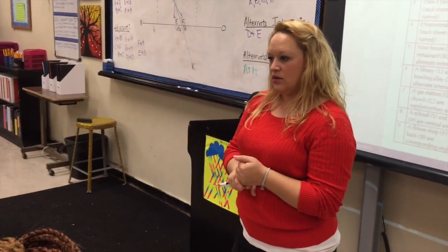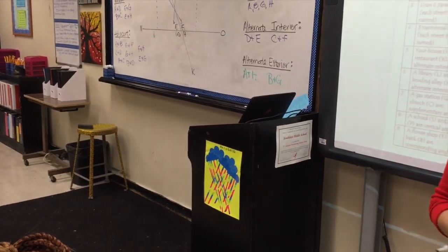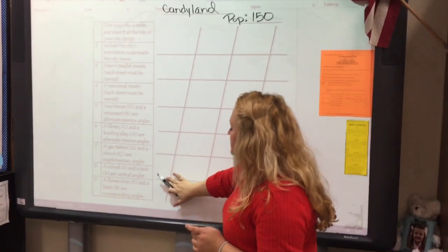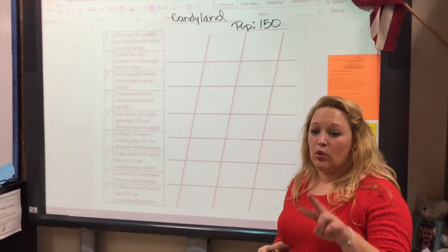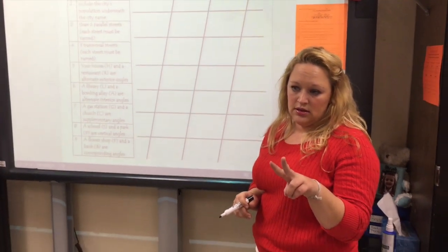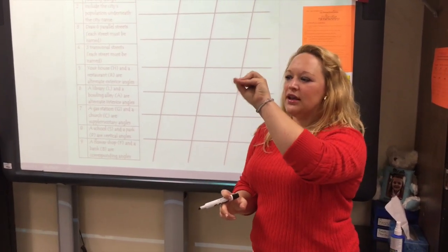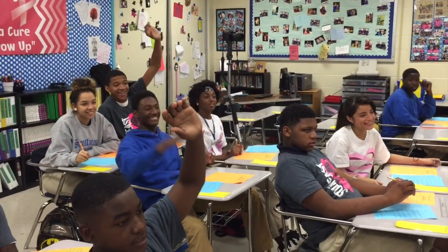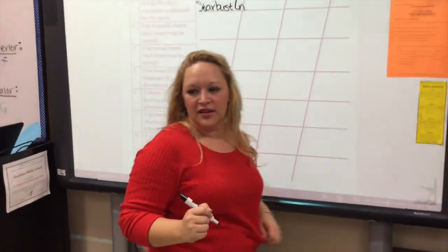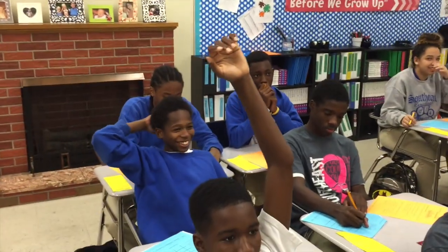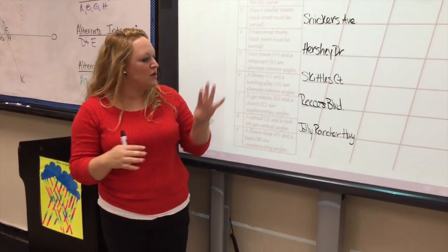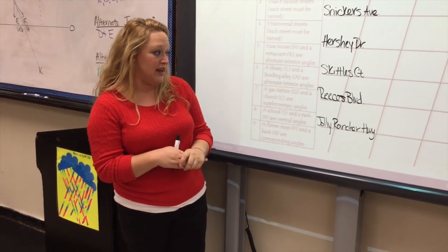Your city must include the following in order to receive full credit: six parallel streets. Do we have six parallel streets? Yes, because they're going in the same direction but they will never touch. The important key about the six parallel streets is they have to be named. So you'll have to come up with candy names. Starburst Lane. Snickers Avenue. We now have our six parallel lines, all named with very creative names. Somebody needs to explain to Chaz what a piece of candy is.